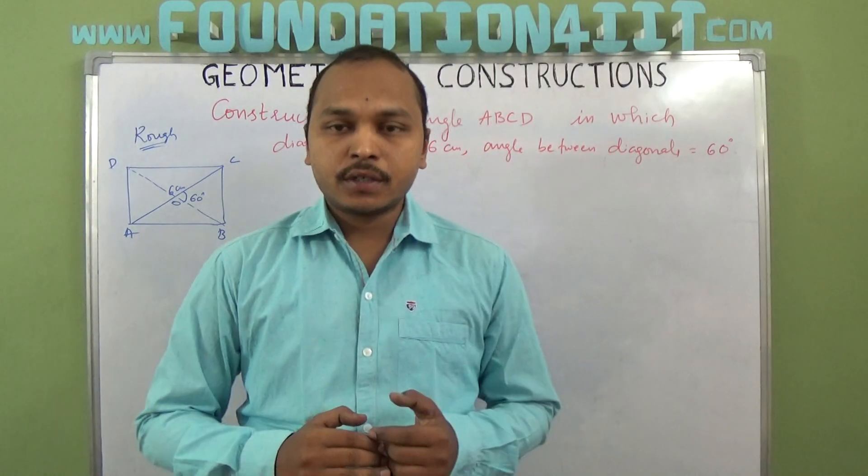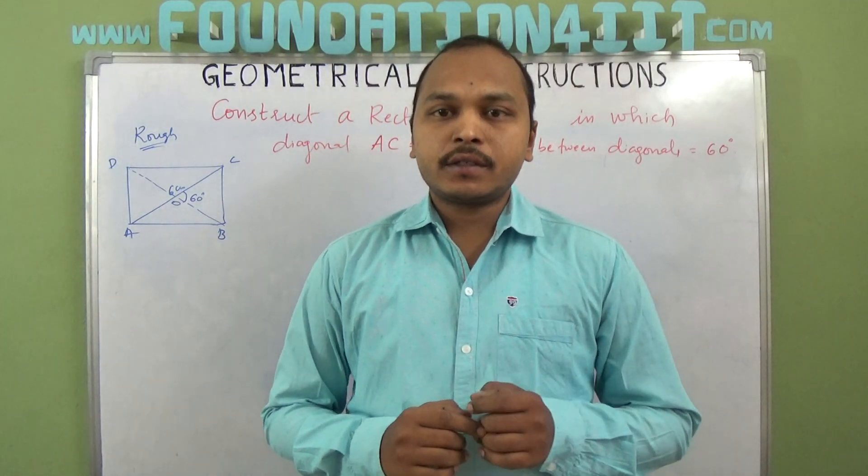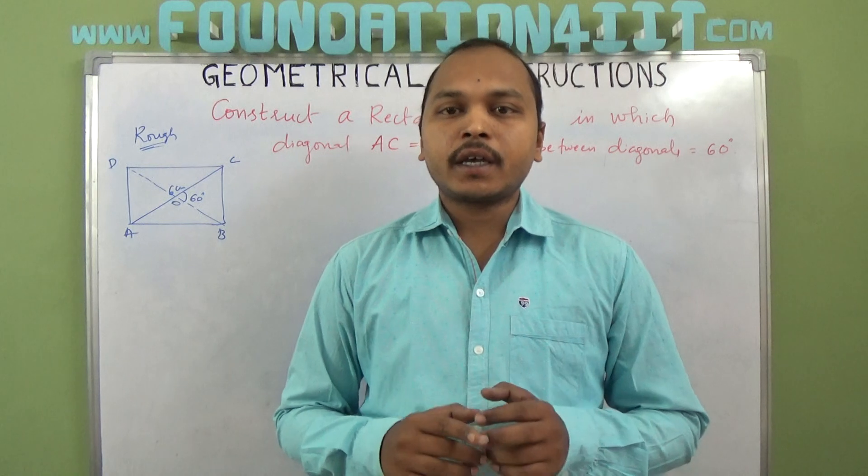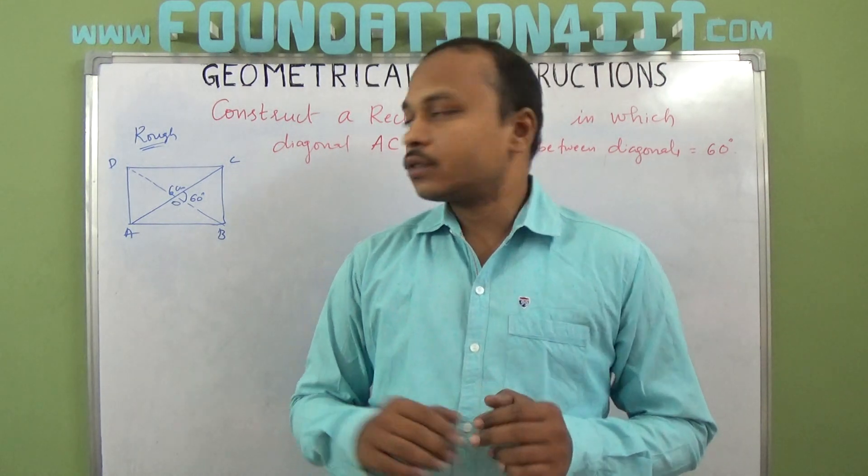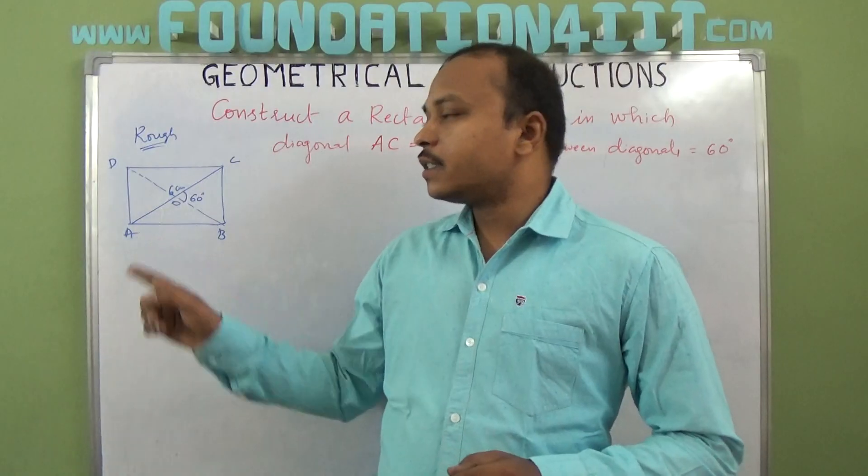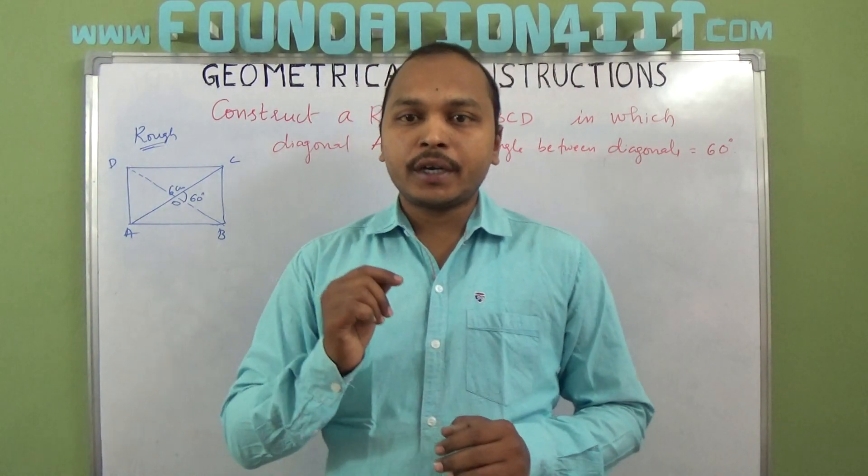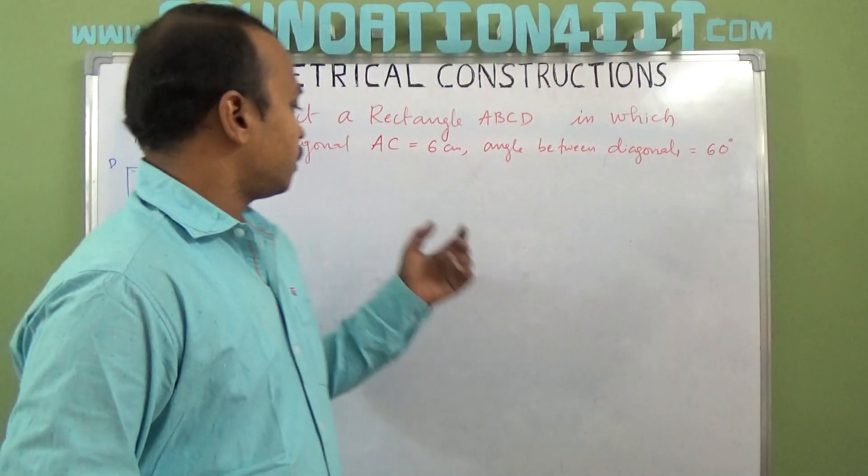The property we are going to use is that any two diagonals in a rectangle bisect each other. That means AC midpoint and BD midpoint are the same. First we will construct diagonal AC.